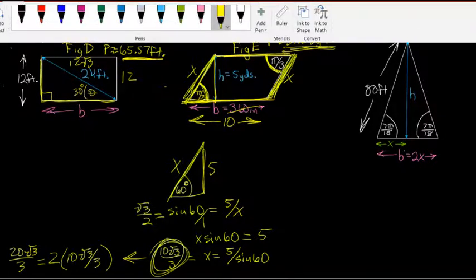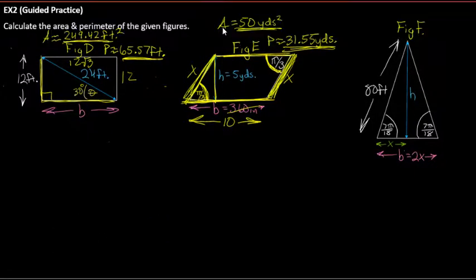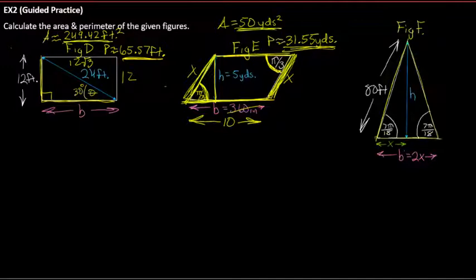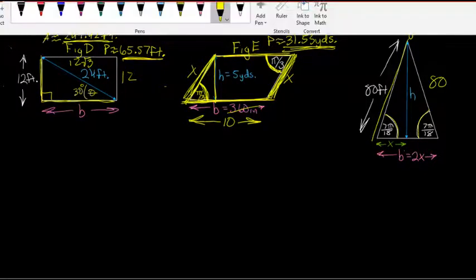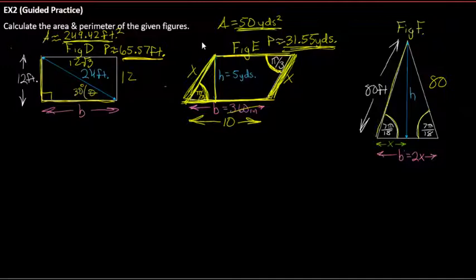Now let's look at Figure F — a triangle. The perimeter will actually be the easiest part. Looking at this triangle, the two base angles are identical at 7π/18, which means it's isosceles. An isosceles triangle has two identical angles and two congruent sides, so if one side is 80, the other is also 80.